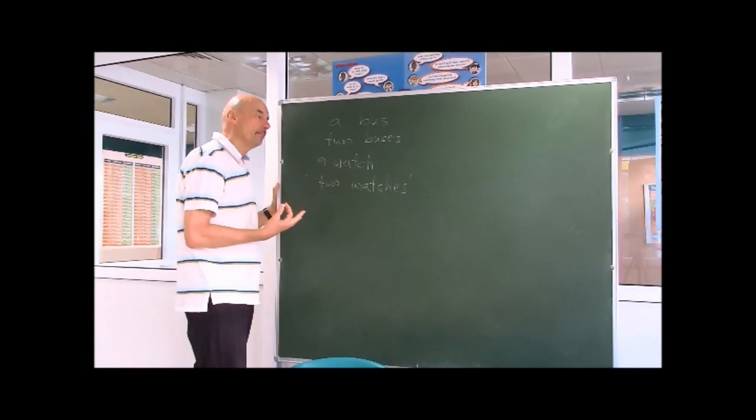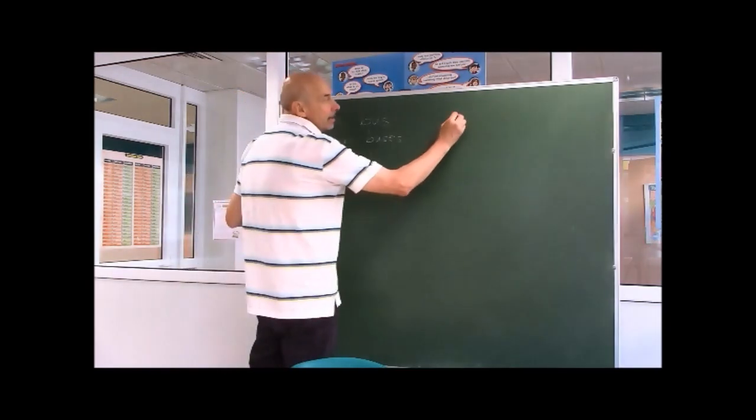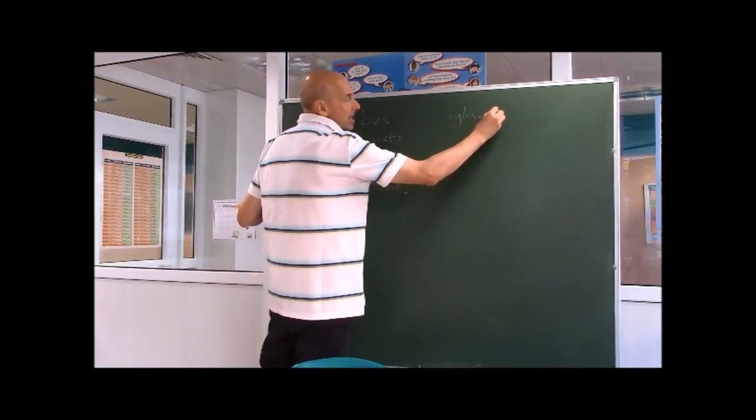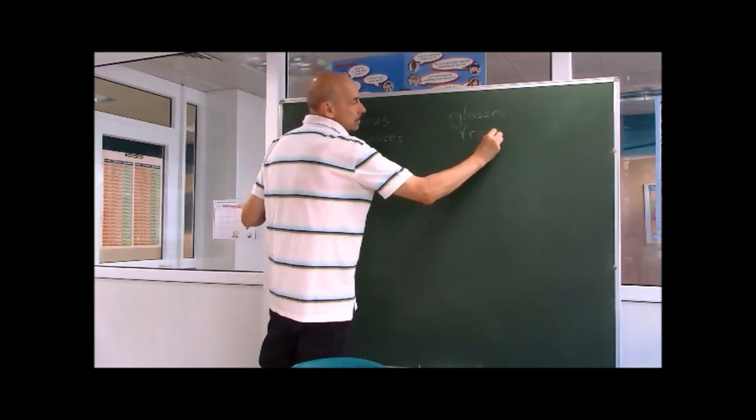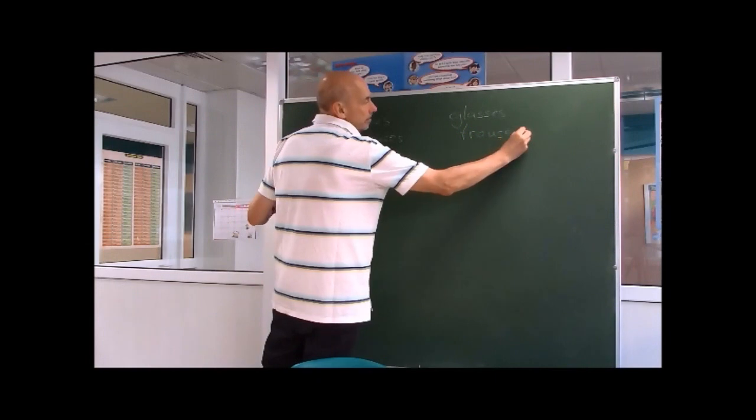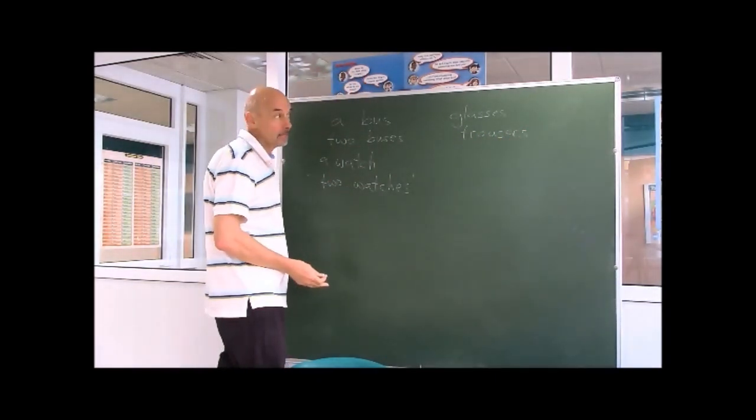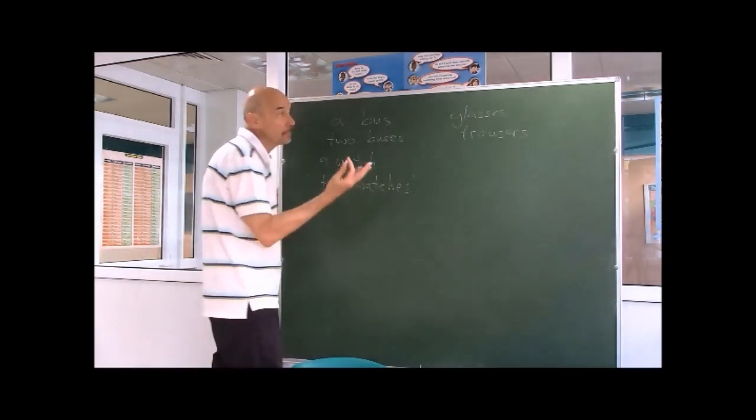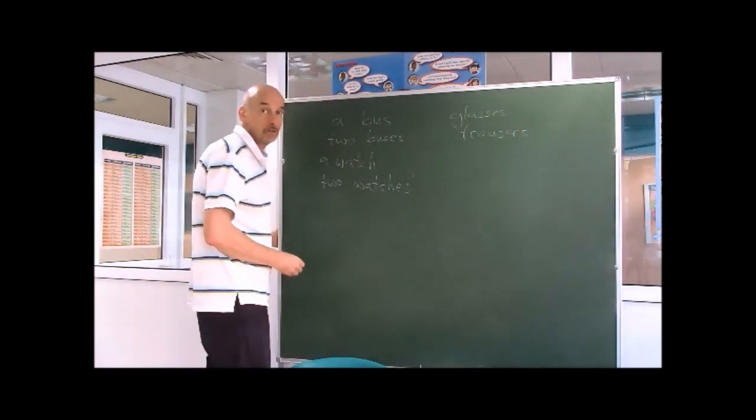Now, the thing is, you have some nouns which are a little strange, of course. For example, you have things like glasses, trousers, which are always plural. Say, a pair of glasses, a pair of trousers, sunglasses. Okay, these are always plural.